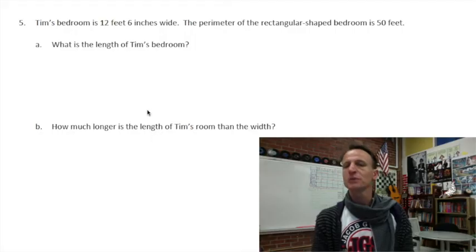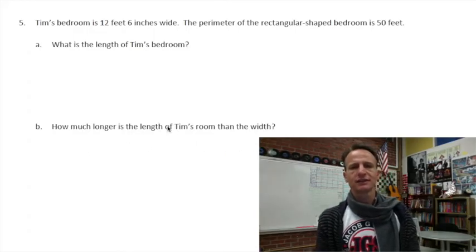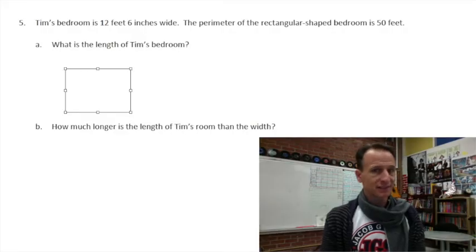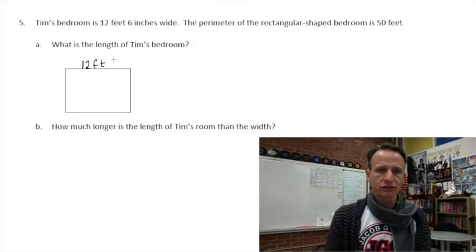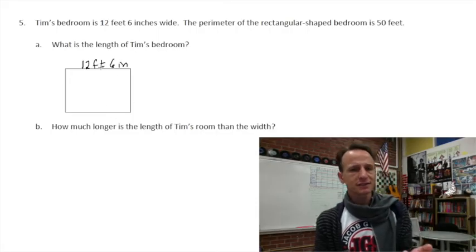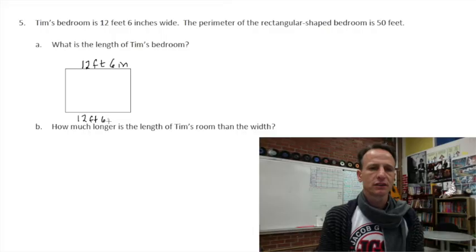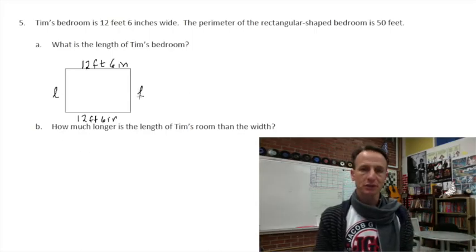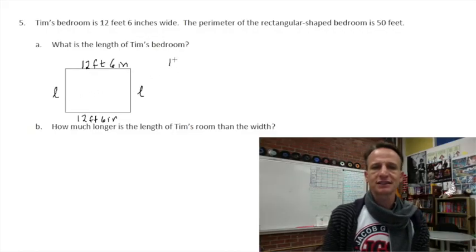We draw the rectangle. The width is 12 feet six inches; the opposite side is also 12 feet six inches by definition of a rectangle. To find the length, we add the two widths together and subtract from the total perimeter, then cut it in half. 12 feet six inches plus 12 feet six inches: six plus six is 12 inches, which equals one foot; 12 feet plus 12 feet is 24 feet, plus one foot — that's 25 feet.